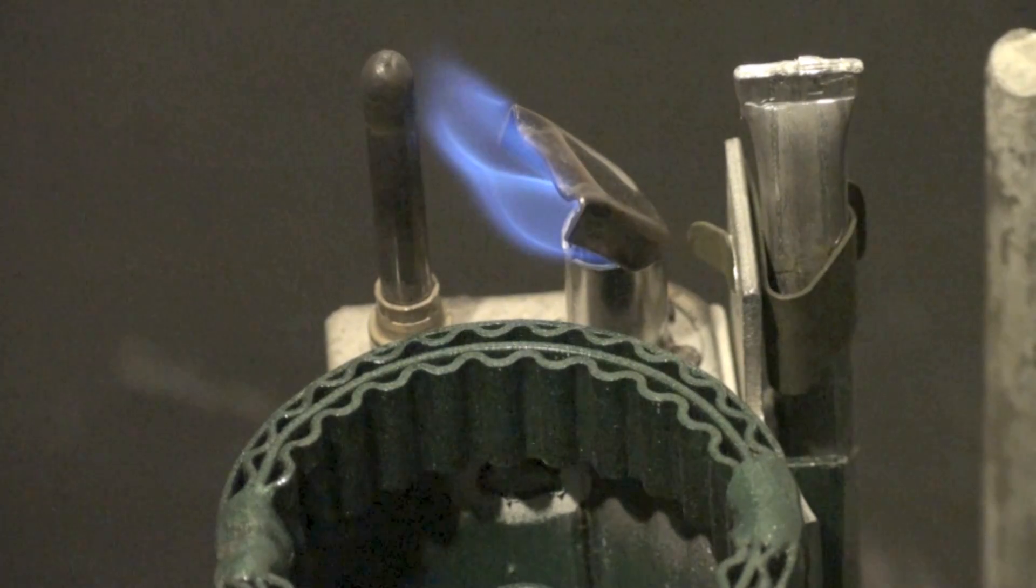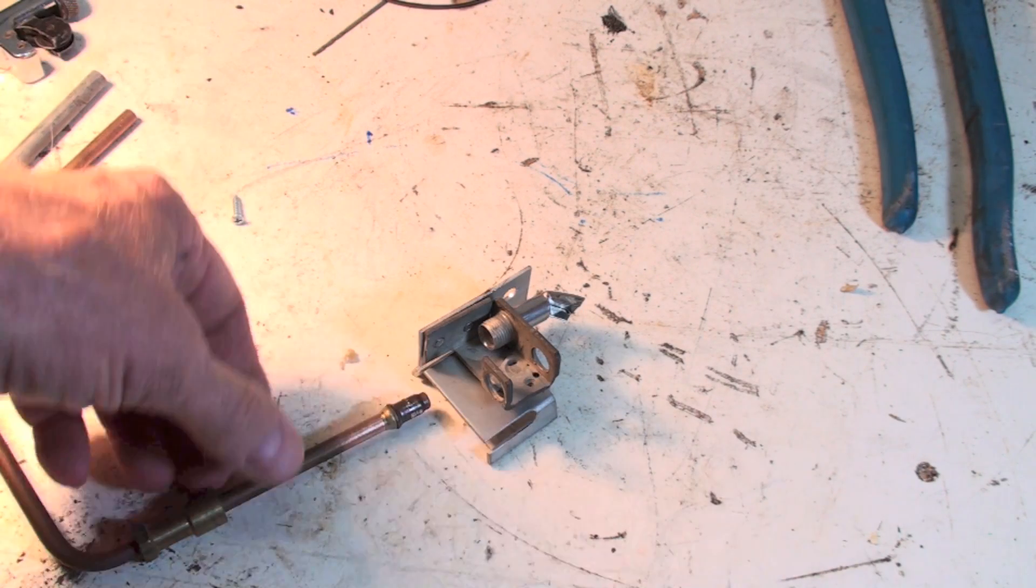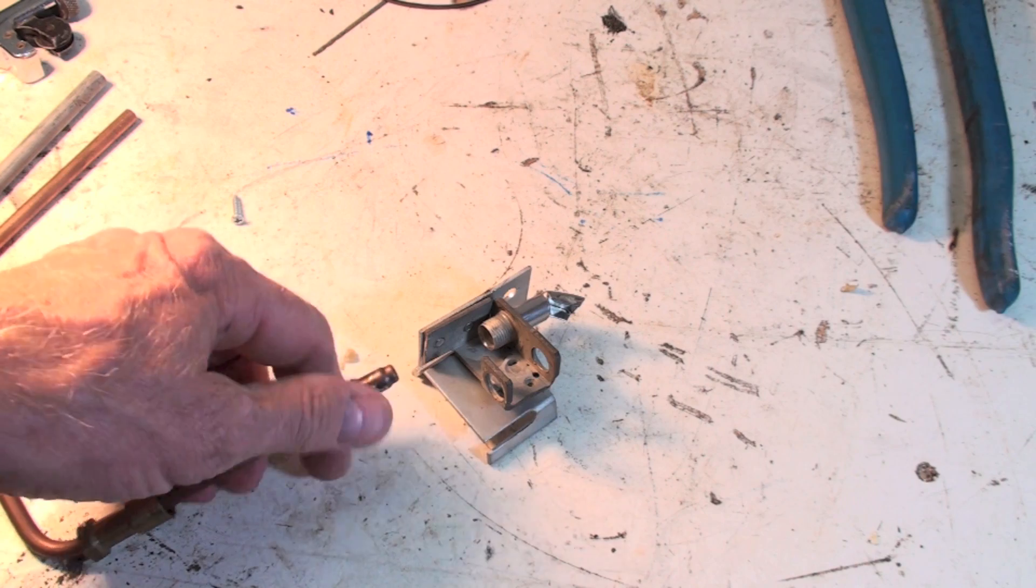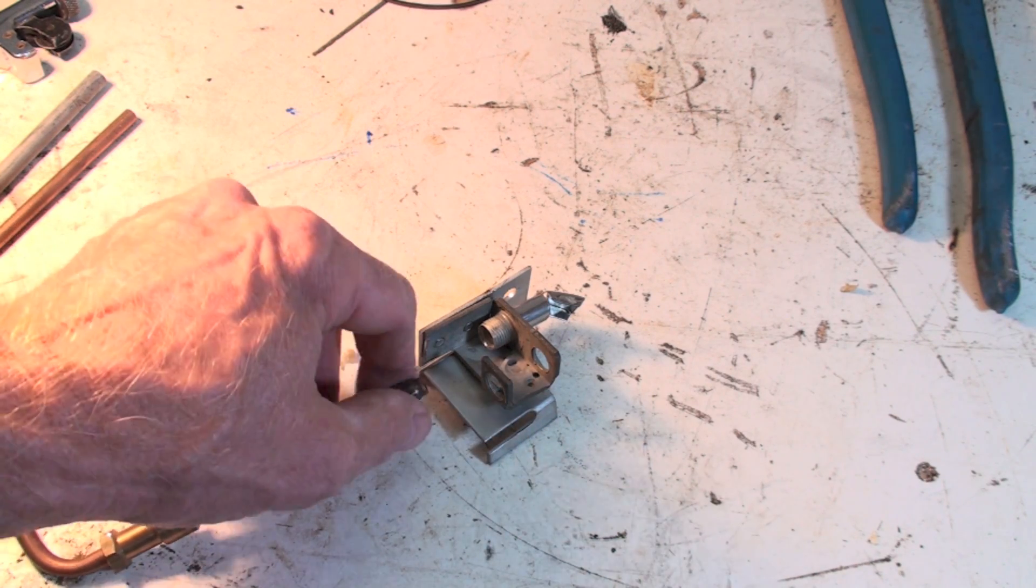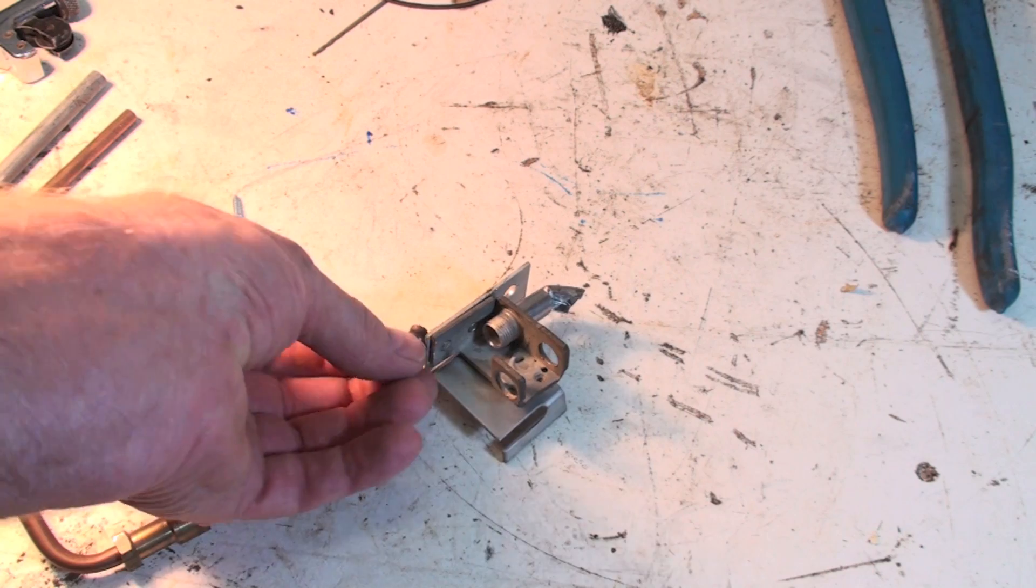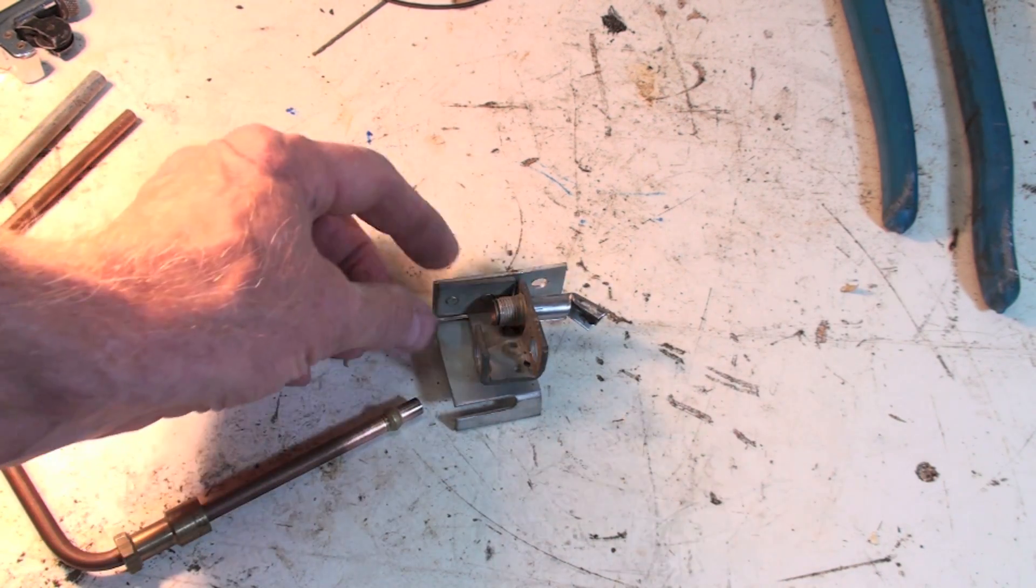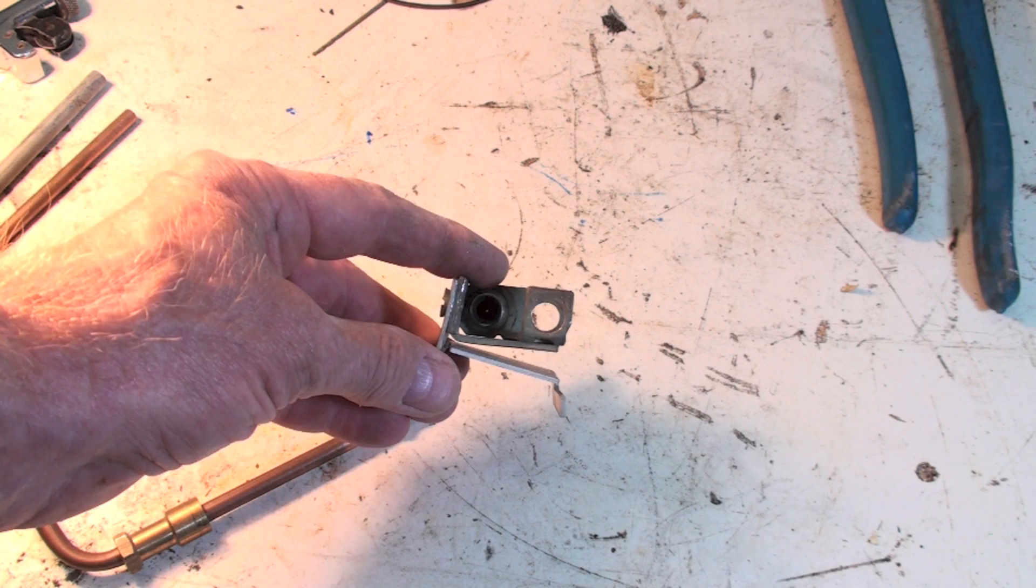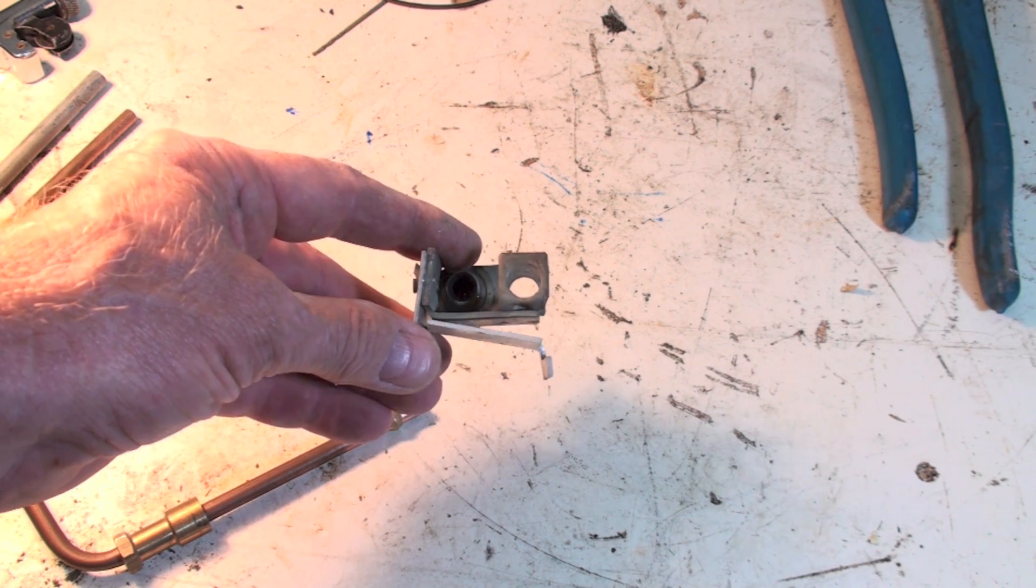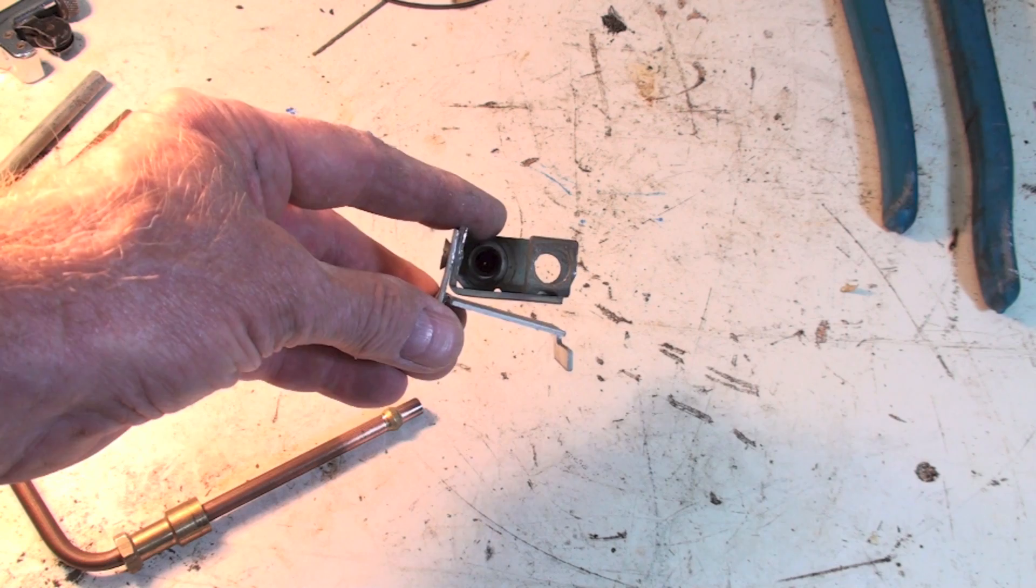There is an orifice in these things. And we'll take that out. Okay, here we've got that pilot assembly torn apart. Here's your pilot tube. And this is the orifice. And the orifice fits right in there. And there's a hole in the middle of that thing and it restricts the flow.